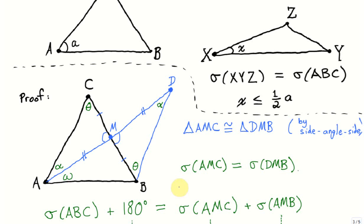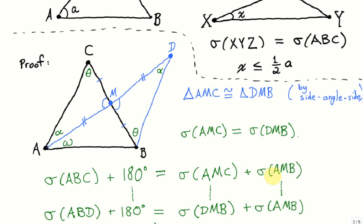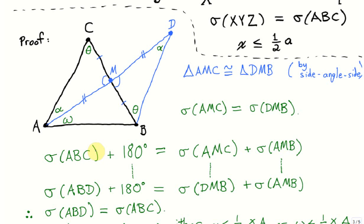By step 2, the angle sum of the large triangle ABC plus 180 degrees equals the angle sums of triangles AMC and AMB. Since the angle sum of AMC equals the angle sum of DMB, we substitute to obtain, by algebra, that the angle sum of triangle ABC equals the angle sum of triangle ABD.